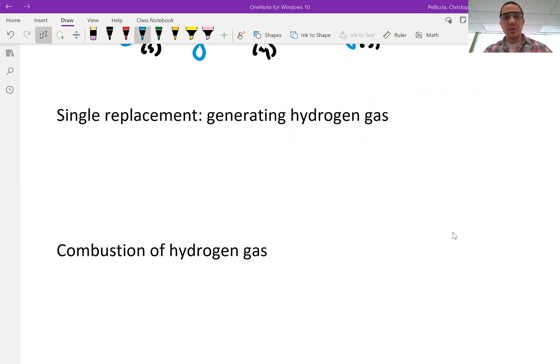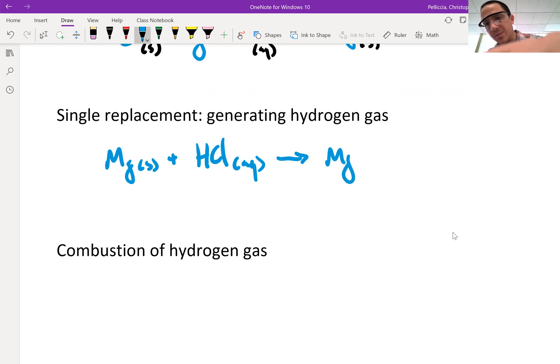In that first example, generating hydrogen gas, I took a sample of solid magnesium metal and added it to a solution of hydrochloric acid. And that generated the products magnesium chloride and hydrogen gas. That reaction needs to be balanced. The two right there.